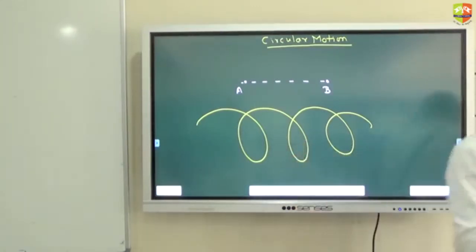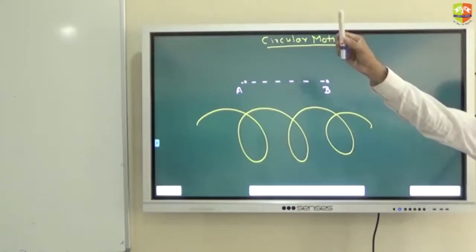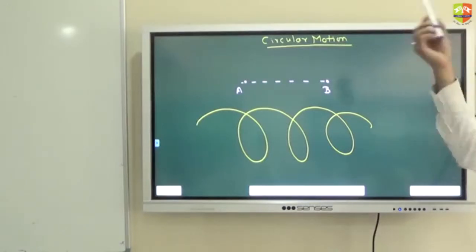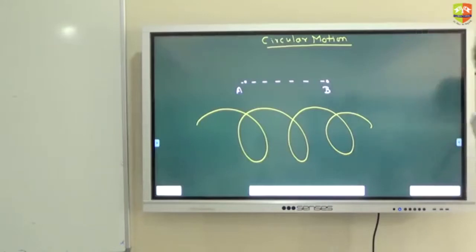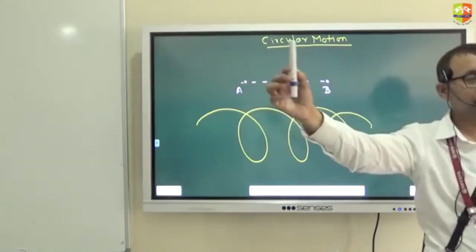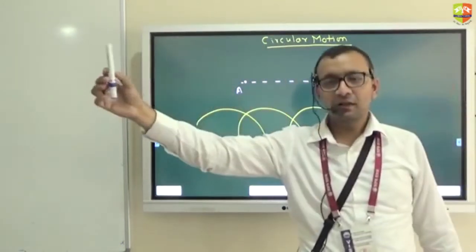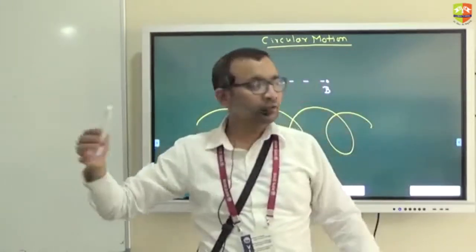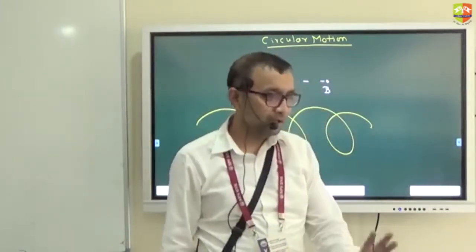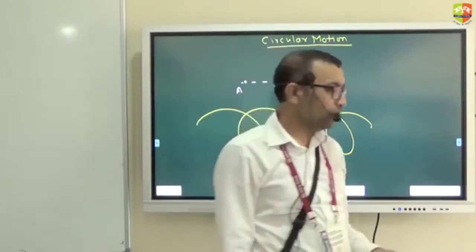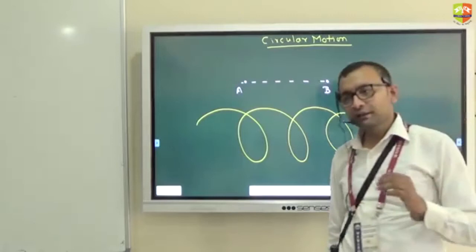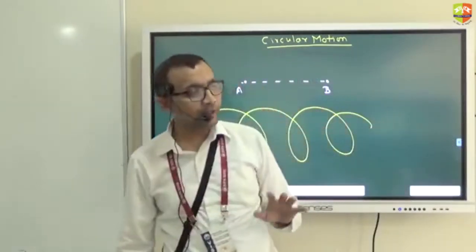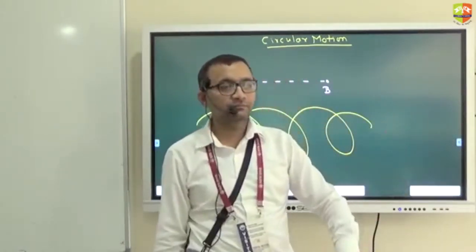Suppose I am moving like this and the fan is at rest - the fan appears to go in the opposite direction. On top of that, the fan starts to rotate also. So while the fan is rotating, it is going back. All the points' motion changes. So is it true that the fan does circular motion with respect to an observer who is at rest? Yes.